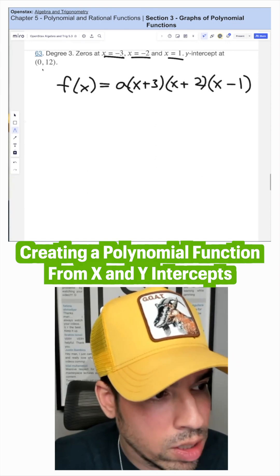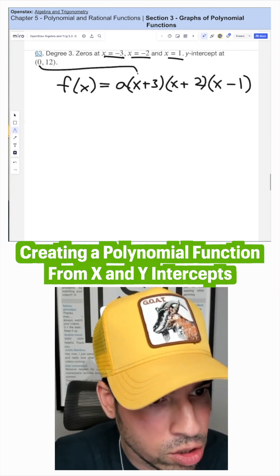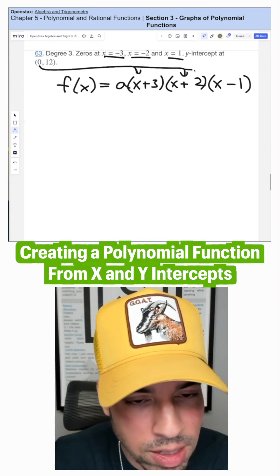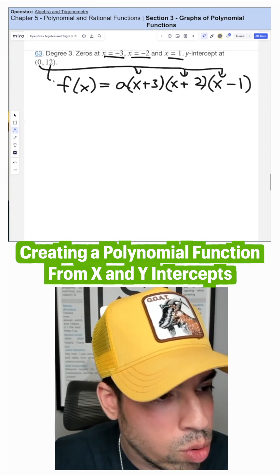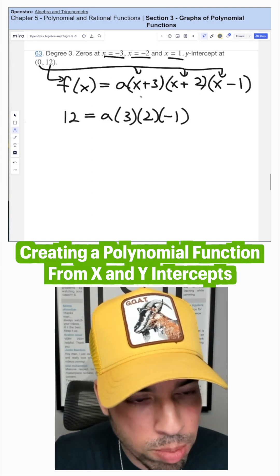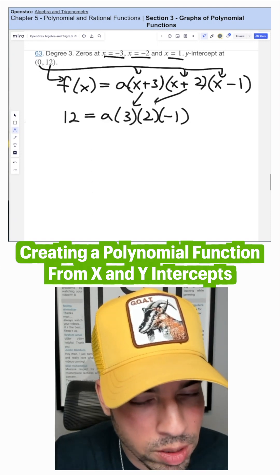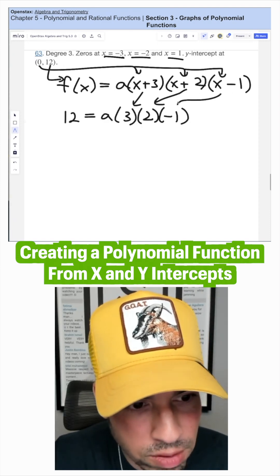Now to solve for a, we're going to use our y-intercept. We'll plug zero in for all our x values and 12 for the function value. So we get zero plus three is three, zero plus two is two, zero minus one is negative one.